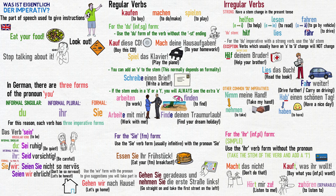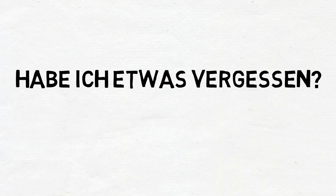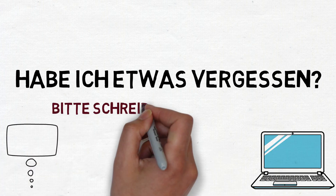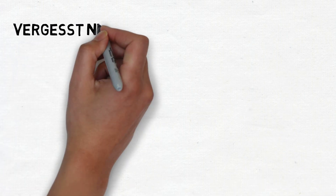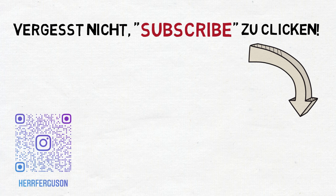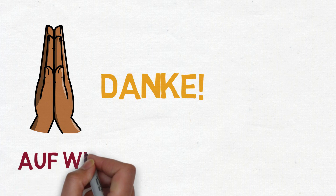And so, that's all there is to know about the imperative and the many ways in which it can be used in German. It's a good idea to pause the video now to recap what we've covered. Remember that you use the imperative to give instructions and that there are three different forms of you: du for informal singular, ihr for informal plural, and sie for formal. Habe ich etwas vergessen? If you're a native German speaker and think I've forgotten something important, please let me know in the comments. Bitte schreibt einen Kommentar. Please remember to click subscribe. You can also follow me on Instagram and Twitter under Herr Ferguson. Danke und auf Wiedersehen.